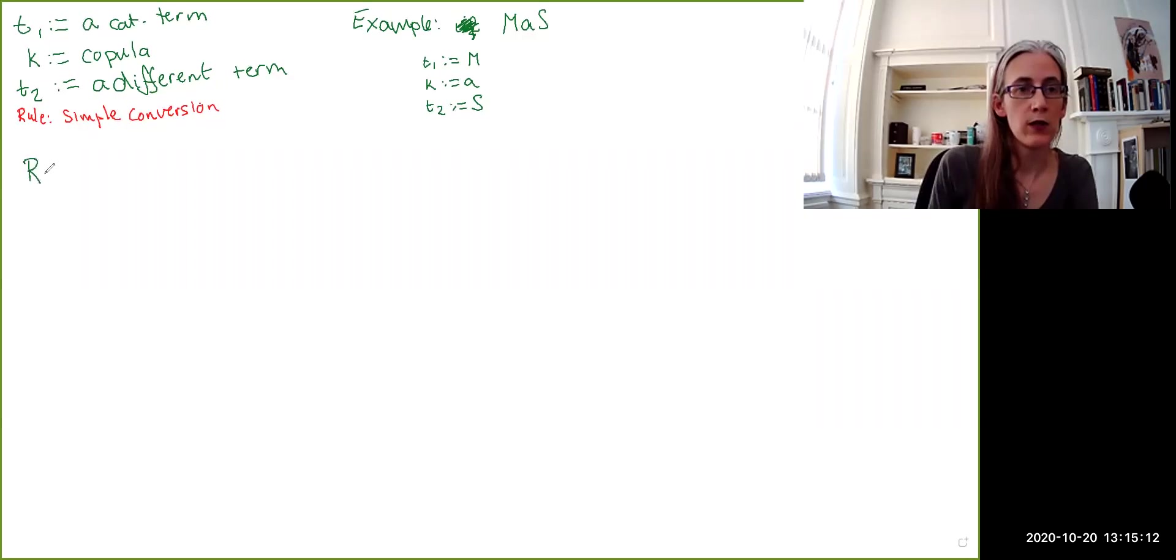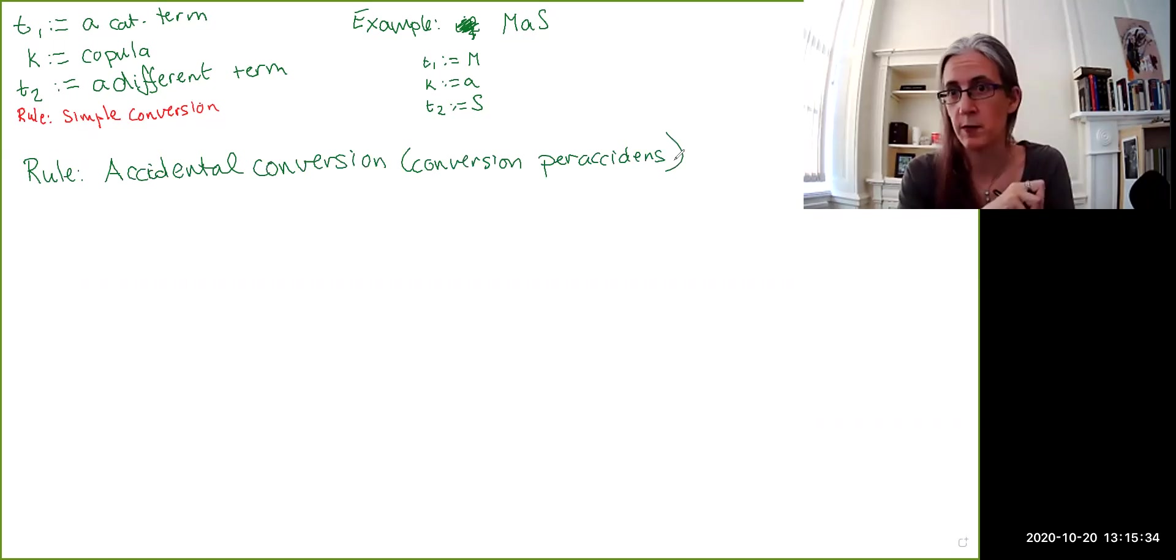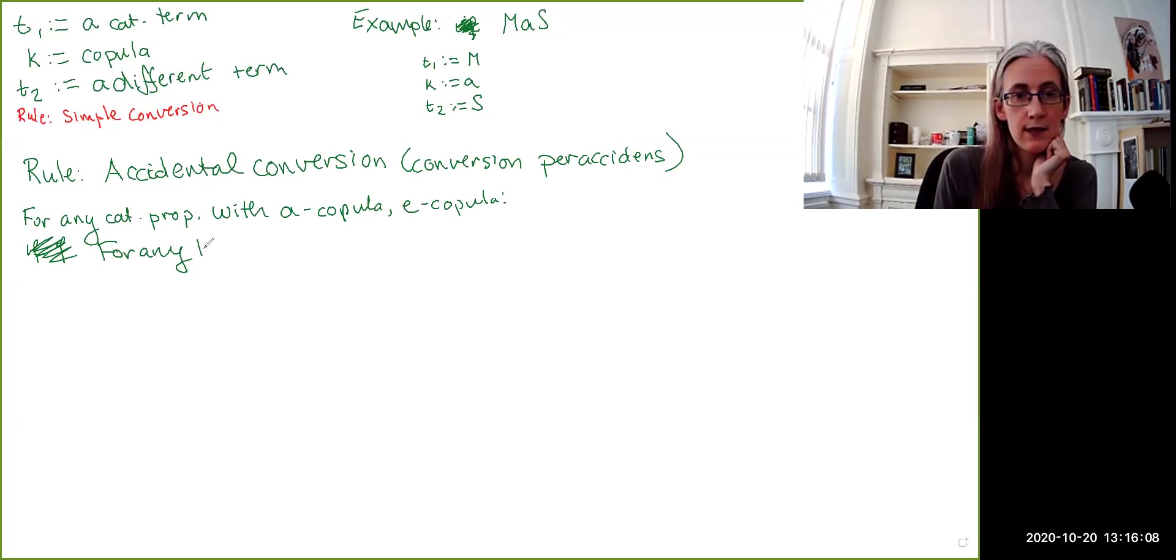Sorry about this. There we go. Anyway, this next rule is accidental conversion. Accidental conversion. Or, if you want to go a little bit Latin, this is conversion per accidents. This will be important later on when we talk about syllogism mnemonics. So, remember, the accidental conversion can also be called conversion per accidents. This one says, for any categorical proposition with an A copula or an E copula.